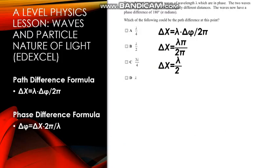The following question states that two coherent sources emit waves of wavelength lambda in phase. The two waves meet at a point having traveled slightly different distances. The waves now have a phase difference of 180 degrees, or π radians. Which of the following could be the path difference at this point? We still use the path difference formula. We keep lambda as it is, multiply lambda by the phase difference π radians, and divide it all by 2π. Since there's a common factor of π on both top and bottom, they cancel down, and the path difference is given by a half lambda.